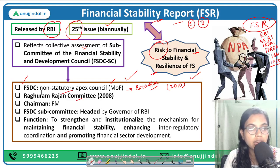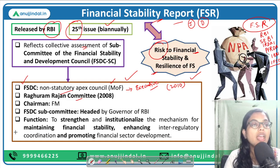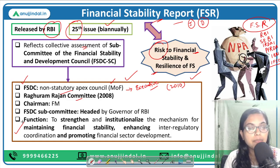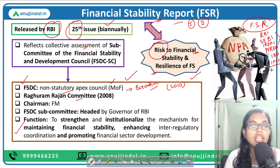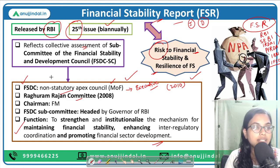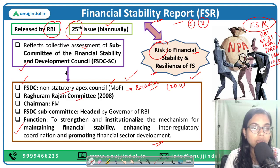The Raghuram Rajan Committee mentioned setting up the Financial Stability and Development Council in order to strengthen and institutionalize the mechanism for maintaining financial stability in the country, enhancing inter-regulatory coordination between regulators, and at large promoting financial sector development. That is the aim and function of this council.